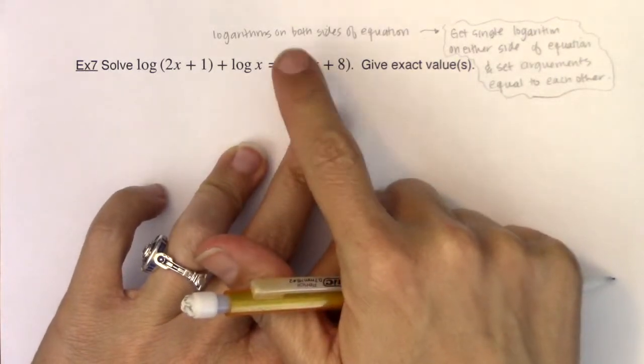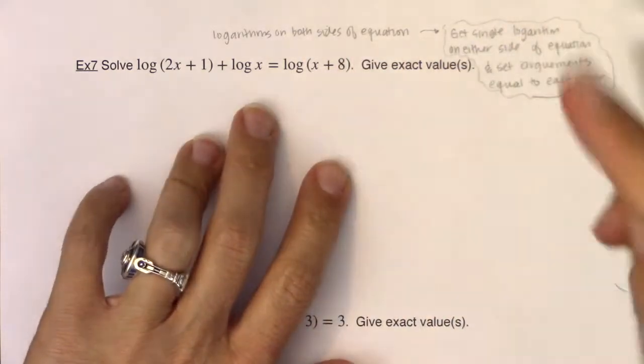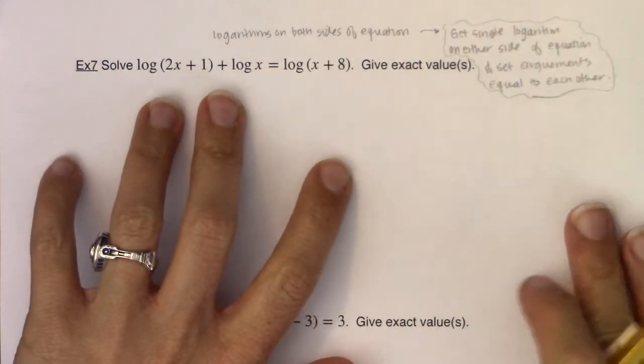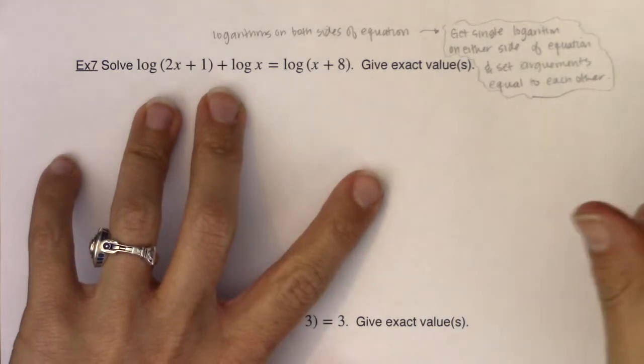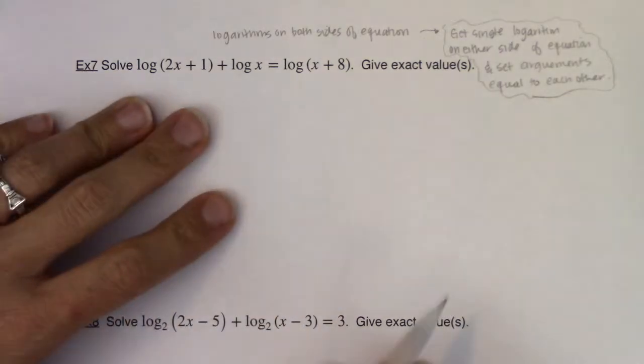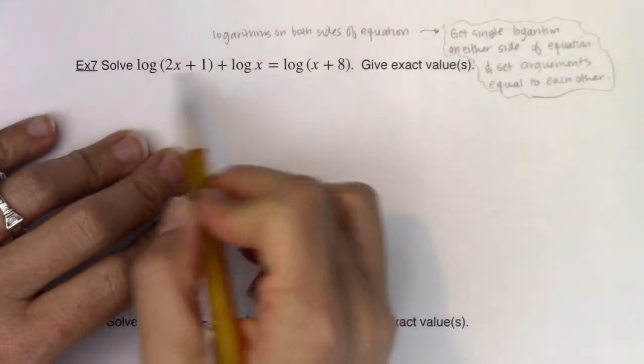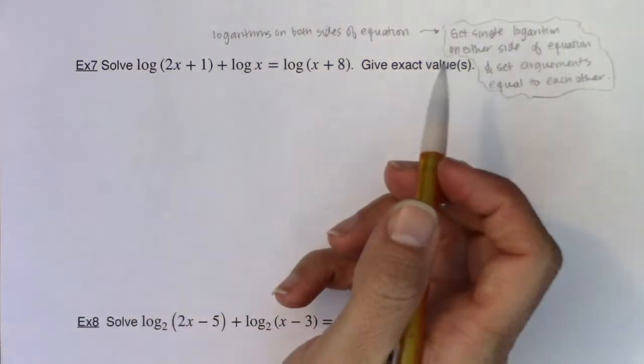So the right side of the equation is good to go. All right, I have a single logarithm over here but the left side of the equation is not good to go because I have two logarithms. So what I need to do on the left side of the equation is get this into a single logarithm. And now just taking note, I see I have common logs, I don't have a subscript down here, so I'm going to assume that's common log.